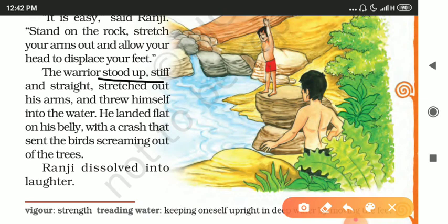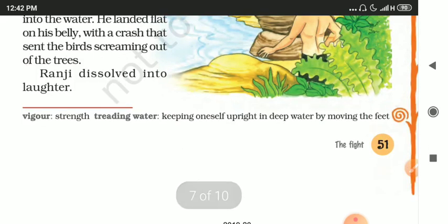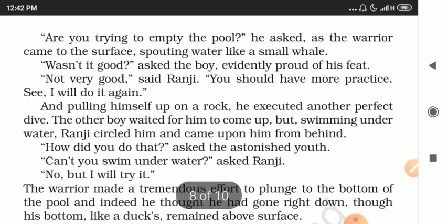The warrior followed Ranji's instructions — stood stiff and straight, stretched his arms — and dived into the water. But he landed flat on his belly with a crash that sent the birds screaming out of the trees. The impact was so loud and the water splashed so much that the birds got scared and flew off screaming. Ranji dissolved into laughter watching all this.